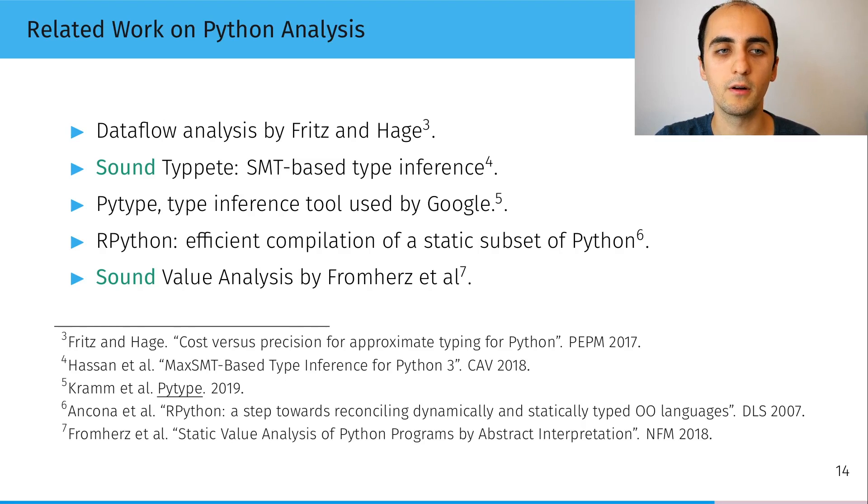There is a tool called PyType, which is much more mature and used and developed by Google. There is the RPython framework, which has an analyzer used to decide if a program fits the static subset in which they can compile more efficiently. And there is a sound value analysis by abstract interpretation, done by Emmerich and Hermuth and others.